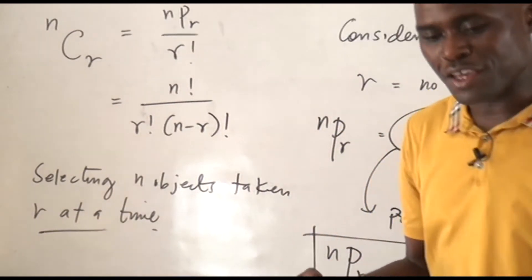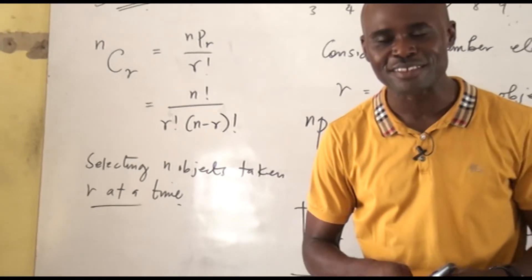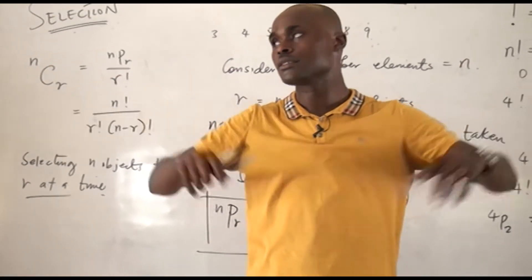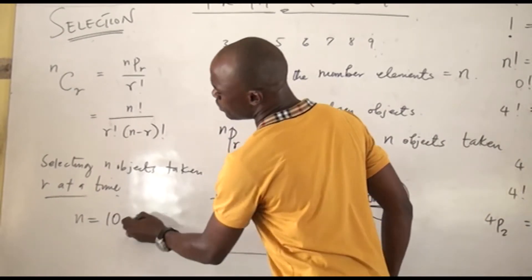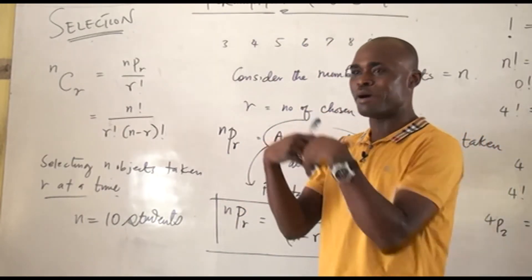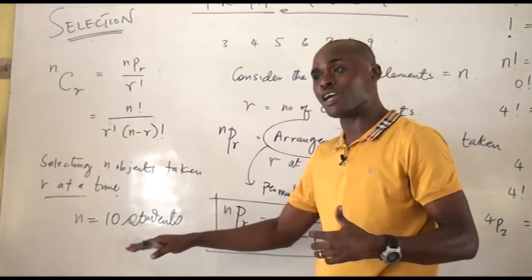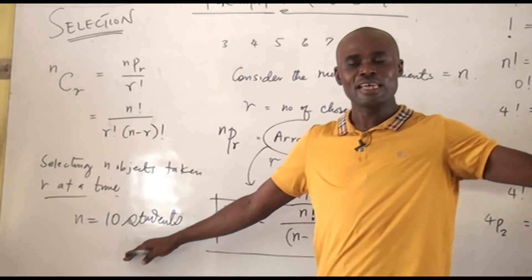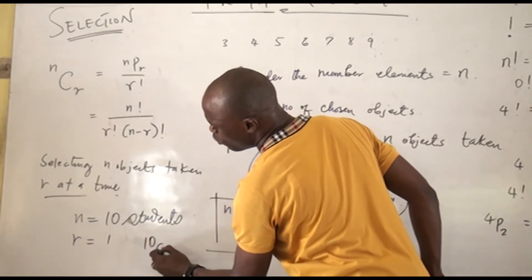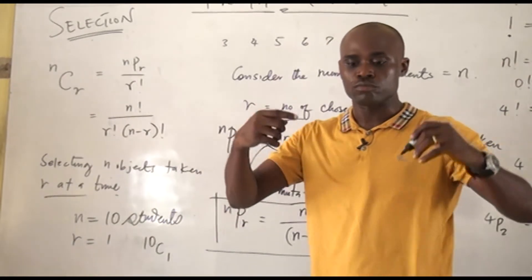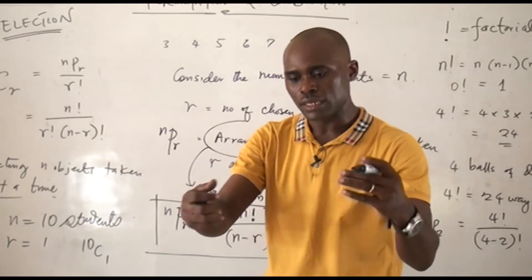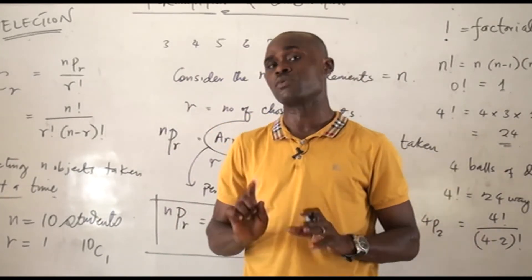If I come to a classroom and I have 10 students, and you ask me in how many ways can I select 2 students from that class — I have 10 students. If I am taking one student out at a time, that is going to be 10 combination 1. If I have 10 students and I want to select 3 students at a time, in how many ways can this be done? Take note — order is not considered when we are talking about combination.